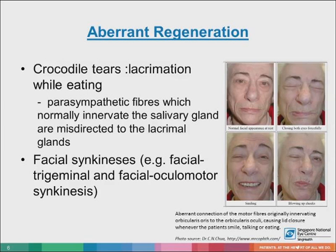What is aberrant regeneration? There are two main types you need to know. The first is crocodile tears: when the patient eats, they tear excessively. This results from parasympathetic fibers that normally innervate the salivary gland being misdirected to the lacrimal gland, causing excessive tearing when the patient eats.